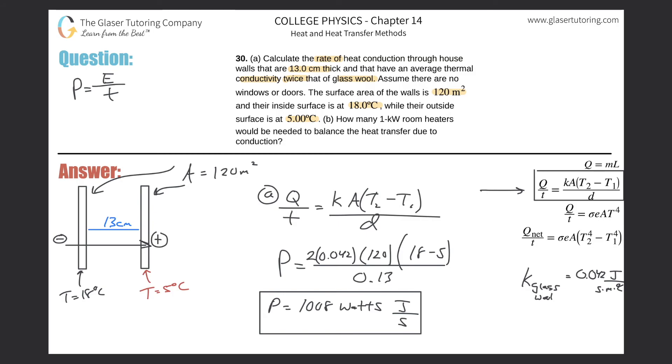Letter B says, how many 1 kilowatt room heaters would need to balance the heat transfer? This is in watts. First, let me convert that into kilowatts. This would be, divide that by 1,000. This is approximately 1.008. I'm not considering sig figs, so don't worry about it. This is kilowatts. So about one room heater would be needed to balance this heat transfer. If it's a 1 kilowatt room heater.